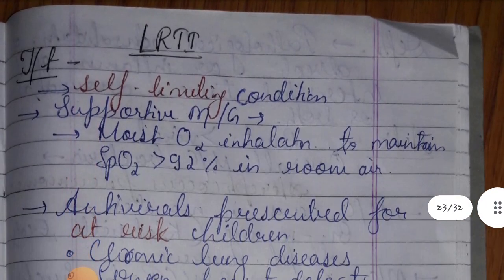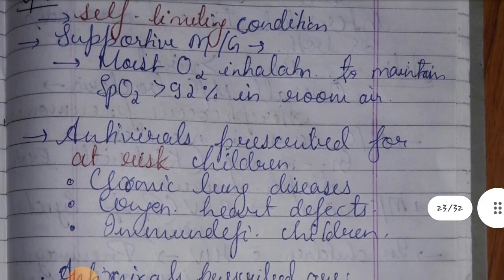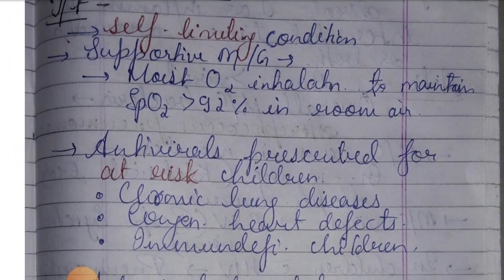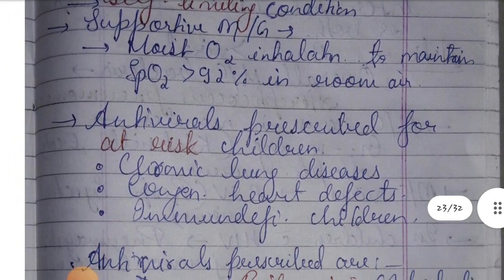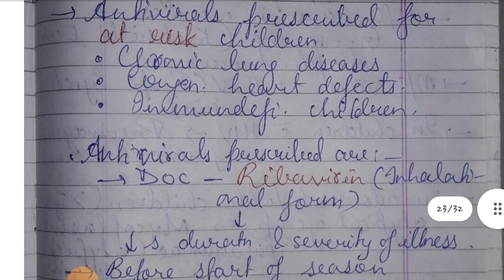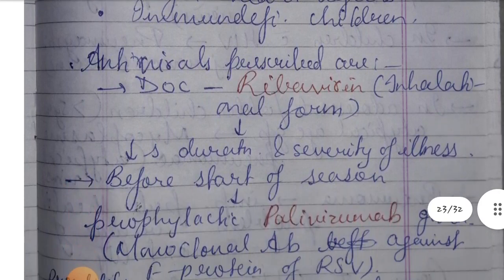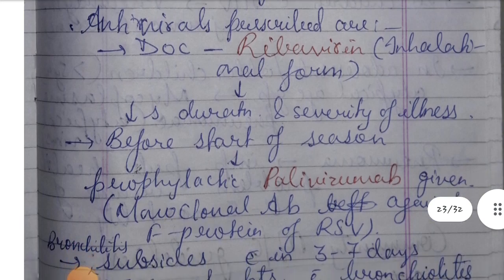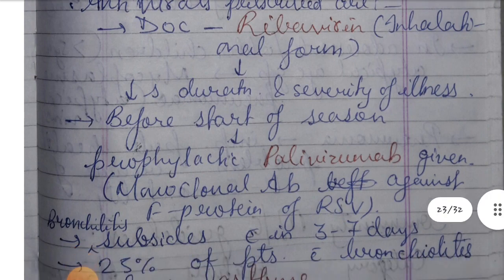Regarding treatment, bronchiolitis is a self-limiting condition and management is usually supportive. Moist oxygen inhalation is used to maintain SpO2 greater than 92% in room air. Antiviral therapy is prescribed for at-risk children, including those with chronic lung disease, congenital heart defects, or immunodeficiency. The drug of choice is ribavirin in inhalation form.